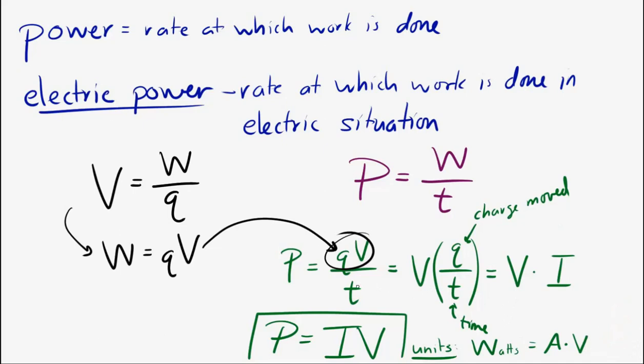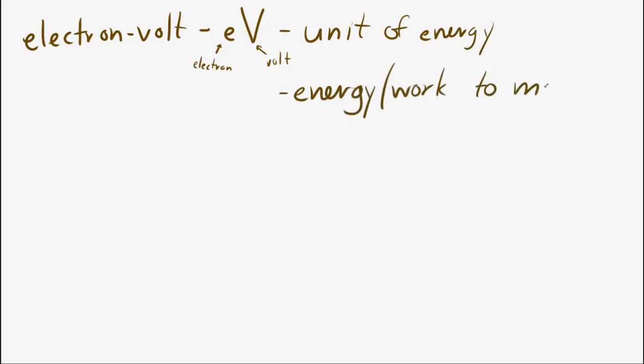Let's end up with the electron volt. So an electron volt is usually abbreviated as eV, little e, big V. And an electron volt is a unit, defined as the energy, or work, that's needed to move an electron through one volt of potential difference. So it's an amount of energy. It's a unit, similar to how a joule is a unit.